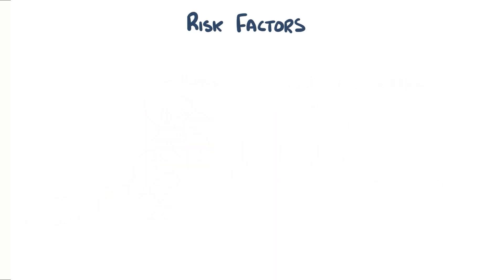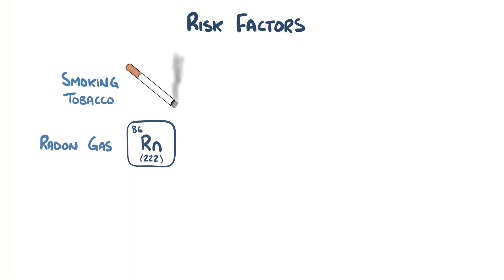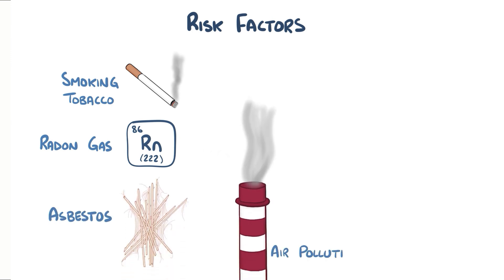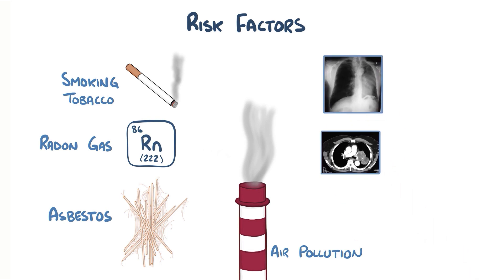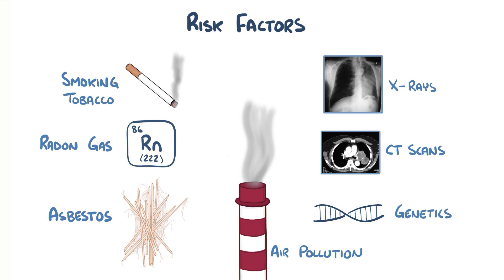A well-known risk factor for small cell lung cancer and some types of non-small cell lung cancer is smoking tobacco, and it's dose-dependent — meaning smoking more cigarettes over a longer period of time increases the risk. Another risk factor is exposure to radon, a colorless, odorless gas which is a natural breakdown product of uranium found in the soil. Other environmental factors include asbestos, air pollution, and ionizing radiation, like from medical imaging with chest x-rays and CT scans. There are also some gene mutations known to be associated with an increased risk of lung cancer development.